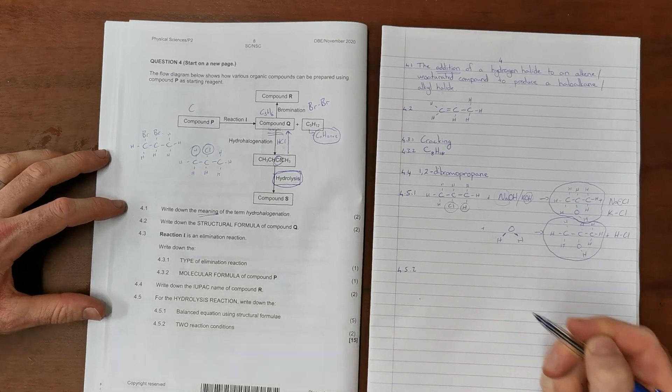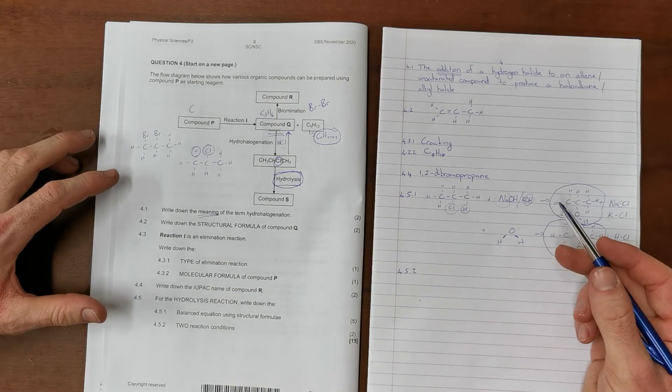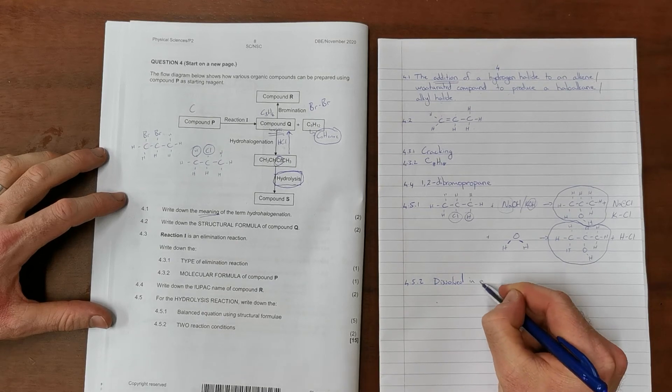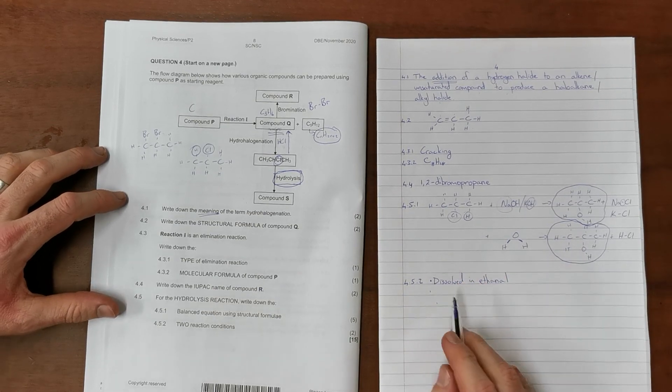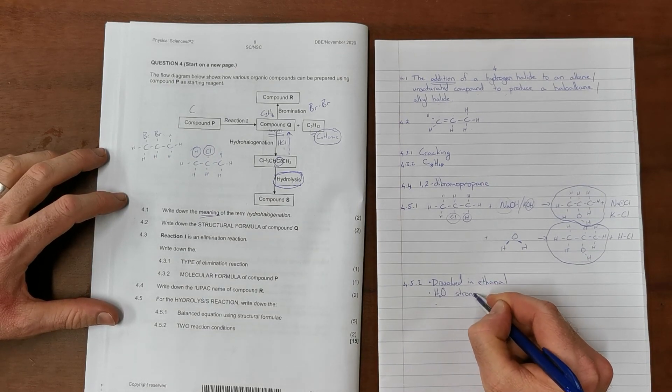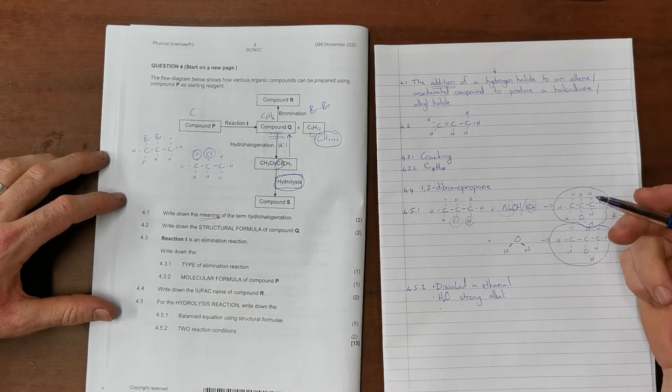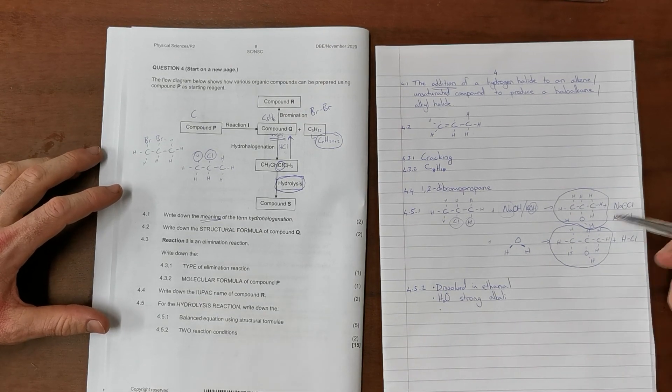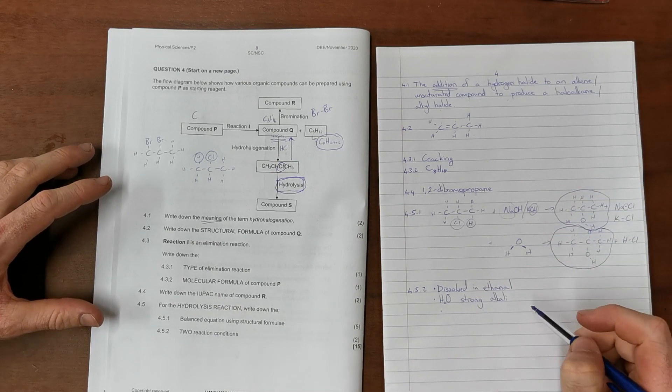Question 4.5.2 says: name two reaction conditions. The reaction conditions for our addition of sodium hydroxide or potassium hydroxide are that the haloalkane must be dissolved in ethanol, and it must also be H2O in a strong alkali. There must be a strong basic solution present. The conditions for the second type of hydrolysis are very similar, where that must be dissolved in ethanol and there must be H2O present with a strong alkali. Either one of these would have been accepted as correct, where the conditions remain largely the same.